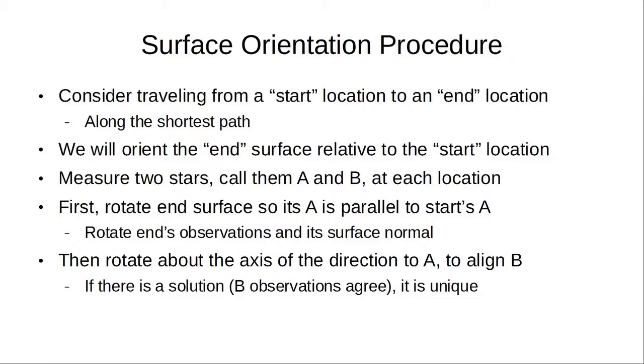Consider traveling from one location to another, I'll call them the start location and the end location, via the shortest path. We want to orient the end surface relative to the surface at the start location. We'll use two stars, call them A and B, measured at each location. First, rotate the end surface so that its observation line to A is parallel to the observation of A at the start location. When we do that, we also rotate the observation of B and the surface normal. Now that A is aligned, rotate the end location around the axis that is the direction to A in order to align B as best we can. If the resulting B observations are now lined up, then that is a solution to the constraints of the star observations and that solution is unique.